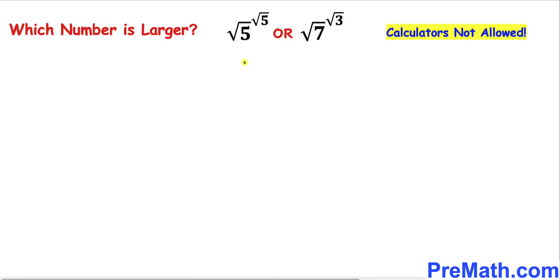Welcome to pre-math. In this video I am going to show you an easy way to find which number is larger: either square root of 5 raised to the power square root of 5, or square root of 7 raised to the power square root of 3.